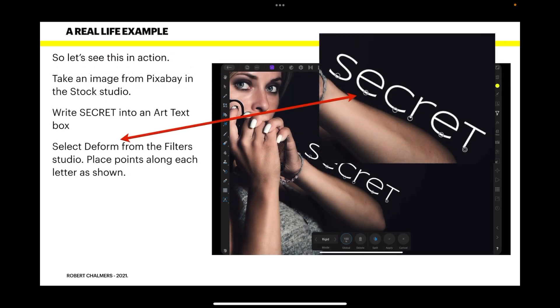Now here it is. This is the real life example. Let's see this in action. I've taken an image from Pixabay in the stock studio. I write secret into the art text box, which I've put along, or just above if you like, the girl's arm there. And you can see I've got an enlarged section with the red arrow pointing to it,